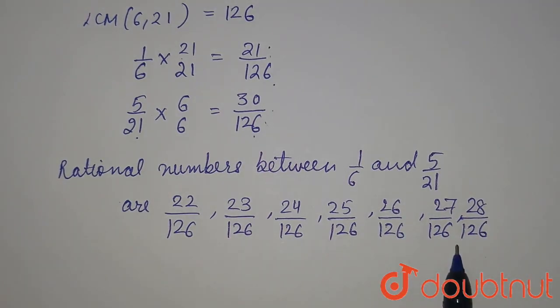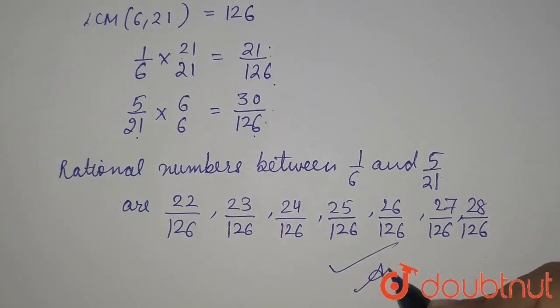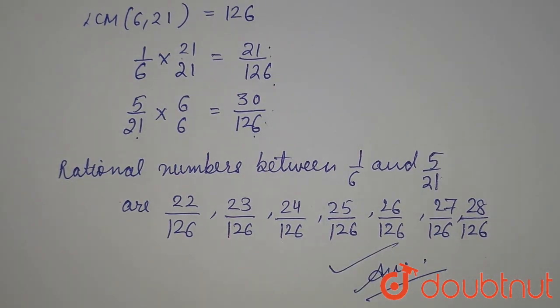So, in total, we have 7 rational numbers between 1 by 6 and 5 by 21. So, this is our required answer. Thank you and happy learning, guys!